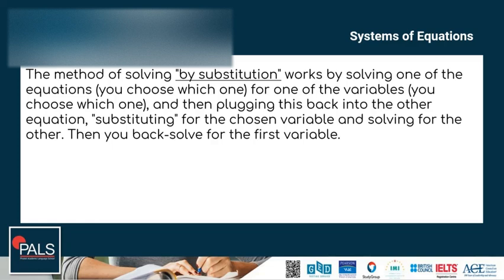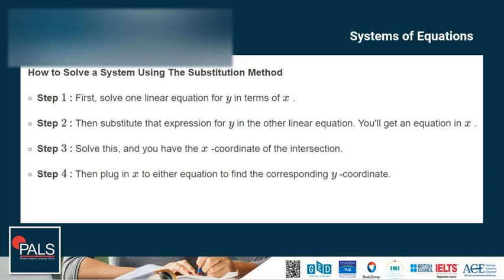The next method is solving by substitution. It works by solving one of the equations for one of the variables, and then plugging this back into the other equation — substituting for the chosen variable and solving for the other. Then you back-solve for the first variable. Step 1: solve one linear equation for y in terms of x. Step 2: substitute the expression for y in the other linear equation. Step 3: solve for x — that gives the x-coordinate of the intersection. Step 4: plug x into either equation to find the corresponding y-coordinate.